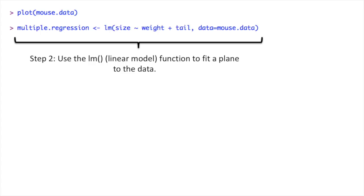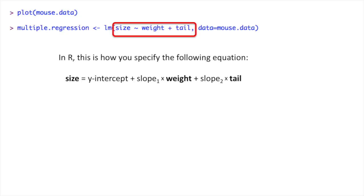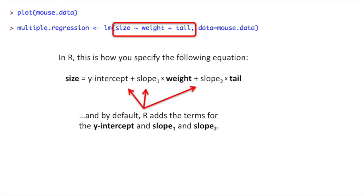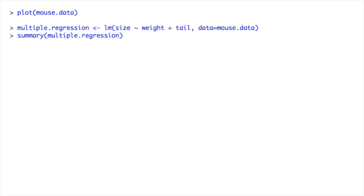Step two, use the linear model function to fit a plane to the data. In R, this is how you specify the following equation. Using the tilde and the plus symbols, we specify that size is predicted by weight and tail. And by default, R adds the terms for the Y intercept and slope 1 and slope 2. Once we've run the linear models function, we can print out a summary of the results using the summary function.